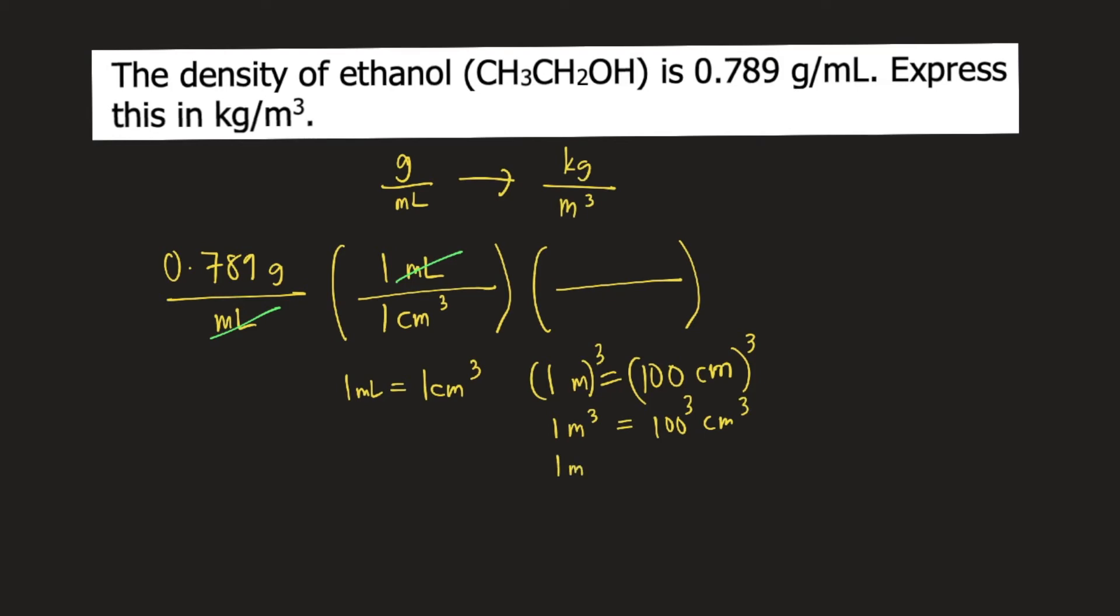So 1 meter cubed is equal to 1,000,000 cm cubed. So you put here 1,000,000 cm cubed is equivalent to 1 meter cubed. So cm cubed will cancel.